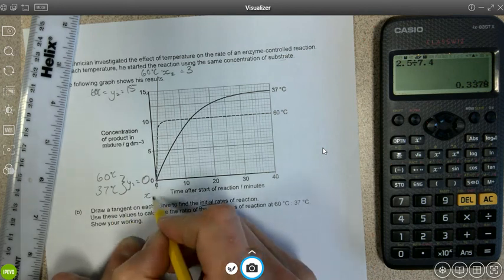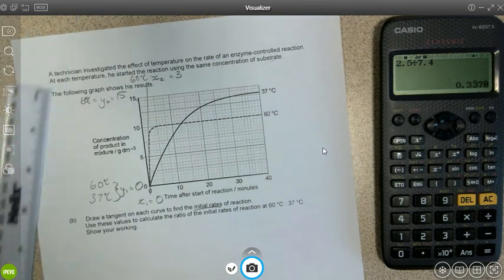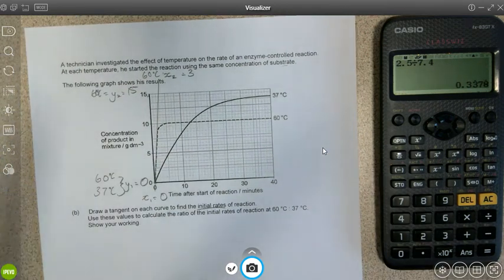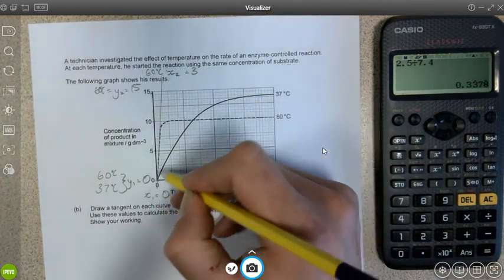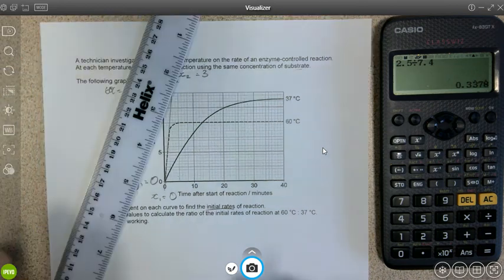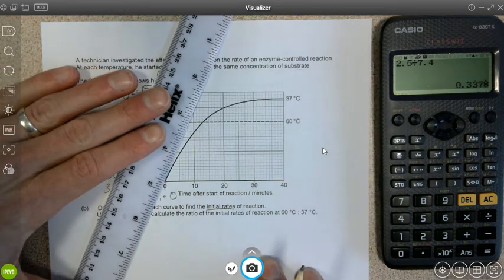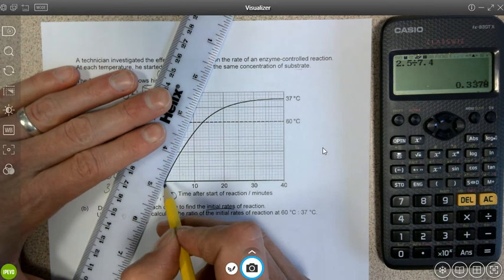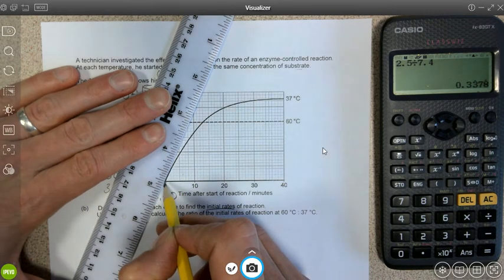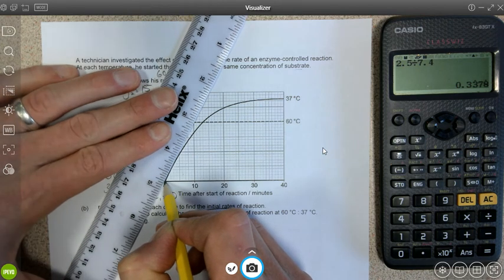Now 37 is slightly trickier because there is a more pronounced curve for 37. So you can follow that, but I think try to make the, if it's asking for the initial, you need to try to make that the same as the initial rate, which perhaps that.